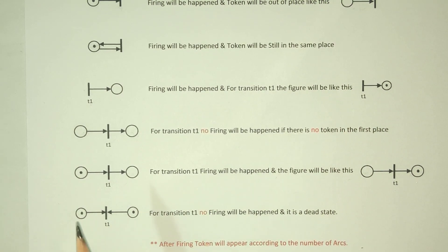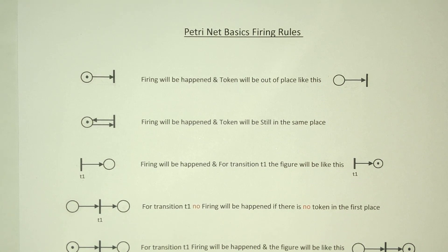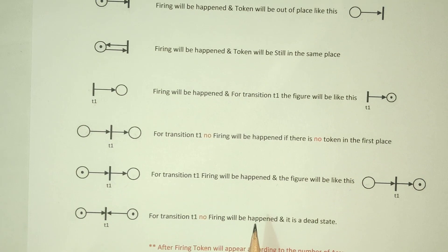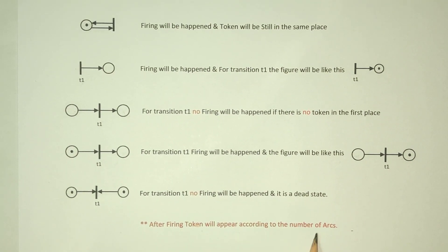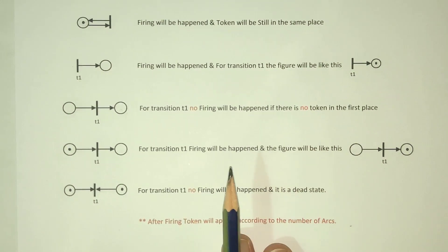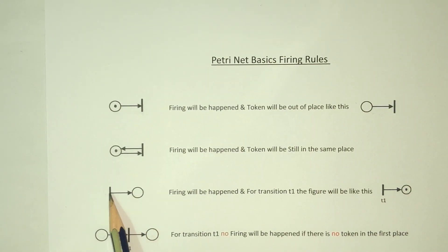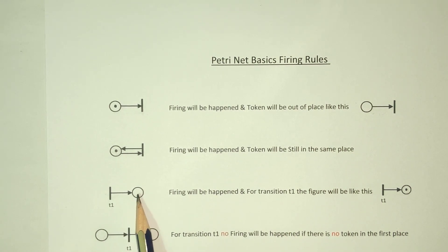This is a basic rule. We can get the firing on this rule to get the firing on the other side. After firing, a token will appear according to the number of arcs. If you have an arc, and 2 arcs, so it will have a document token — this will open an arc token.